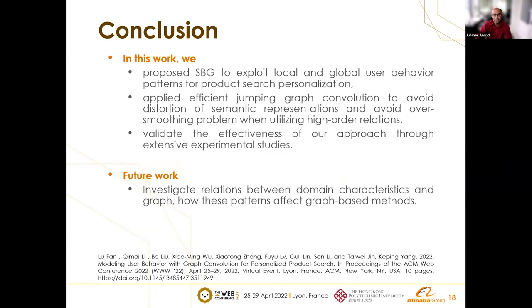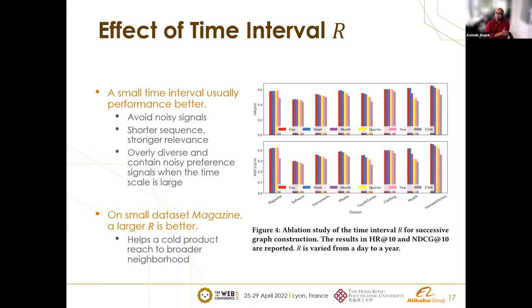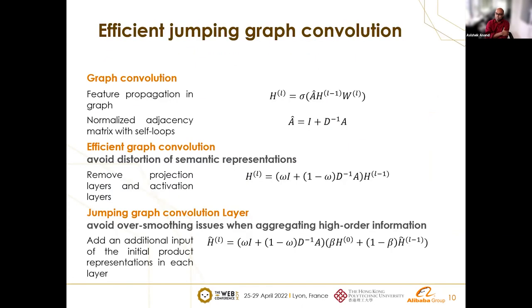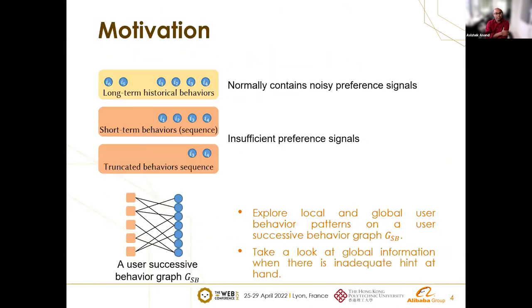Any questions from the audience? A question was raised: since the user successive behavior graph is a bipartite graph, do you think GCNs are the best choice, or could a feature extraction mechanism specific to bipartite graphs be used? The speaker confirmed it is a bipartite graph.